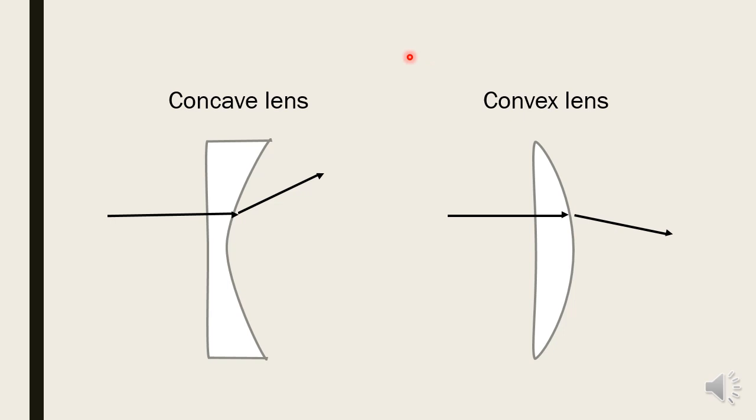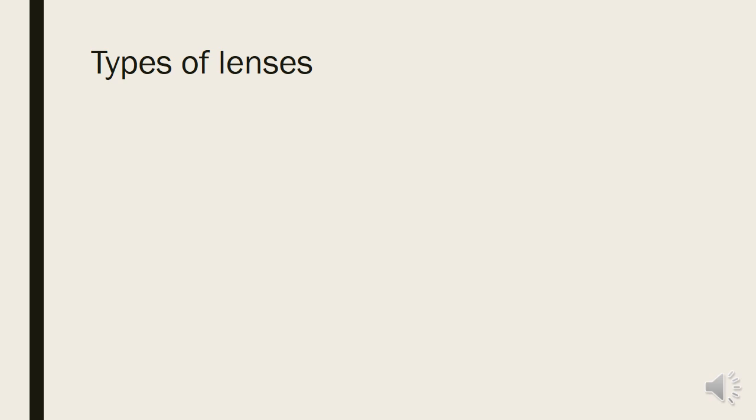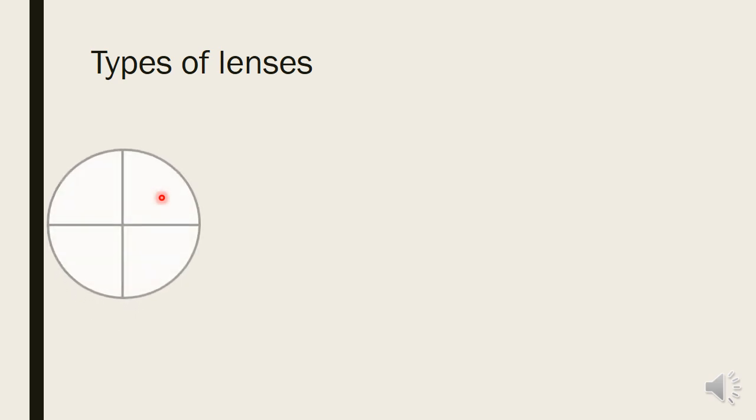One more property of a convex lens is magnification — whenever you view any object through a convex lens it leads to magnification of the image. So apart from concave and convex, there are other types of lenses generally seen in optometry.